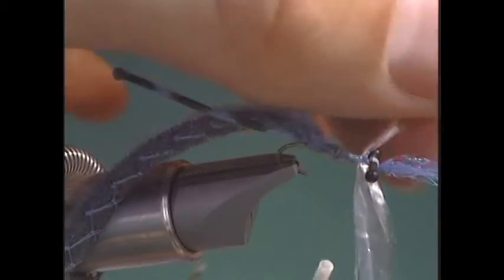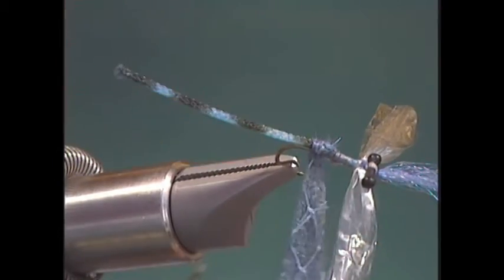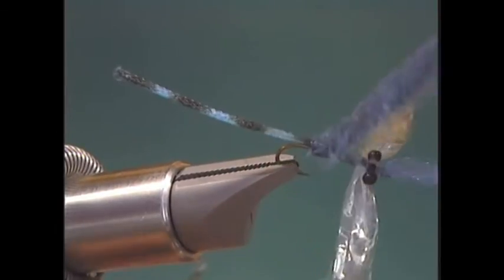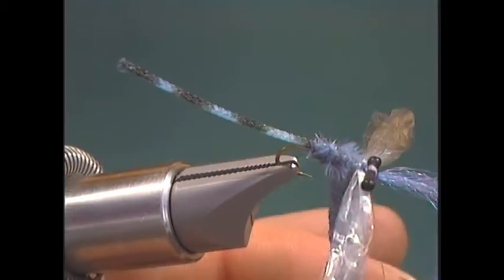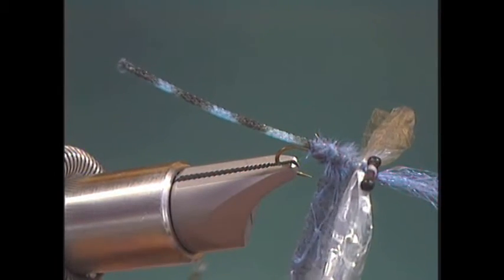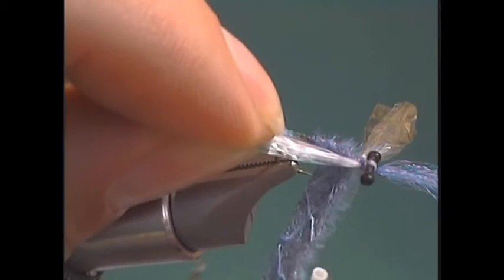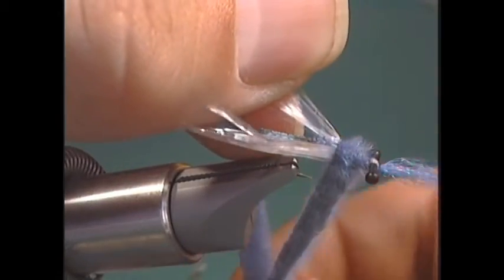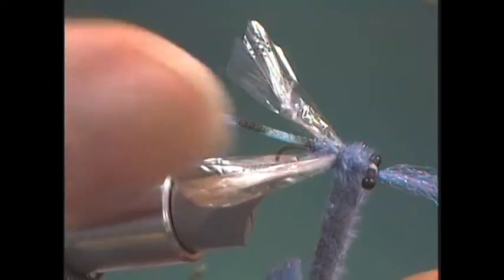Now I just kind of move the wings up out of the way, and we'll wrap our furry foam forward. Just like so. That acts as our dubbing. Get right behind the wing. I'm using a little bit of tension on here. I'll kind of pull that wing back, hold it straight up. Pull that wing back a little bit and wrap it down. We're going to want those wings to slant back a little bit.